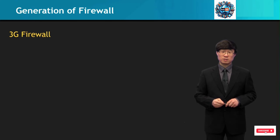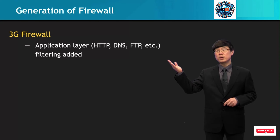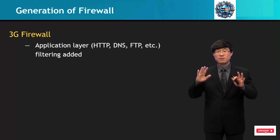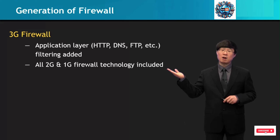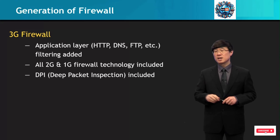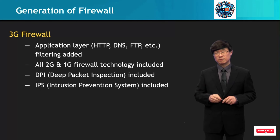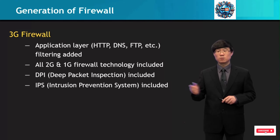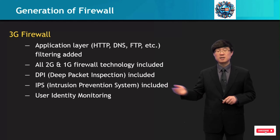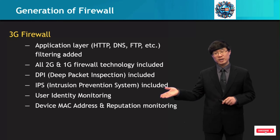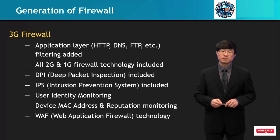The third generation firewalls are the ones we use today. These also include application layer filtering techniques, which include HTTP, DNS, FTP, and behavior detection. All first and second generation techniques are included. In addition, deep packet inspection (DPI) is included, as well as the IPS intrusion prevention system technique. Furthermore, user identity monitoring, device MAC address and reputation monitoring, and web application firewall technology are all included.